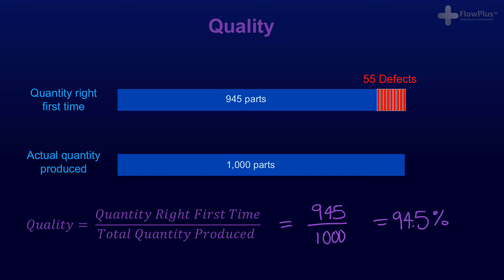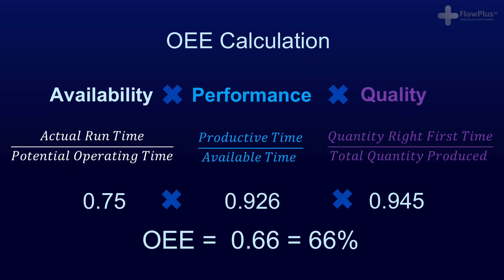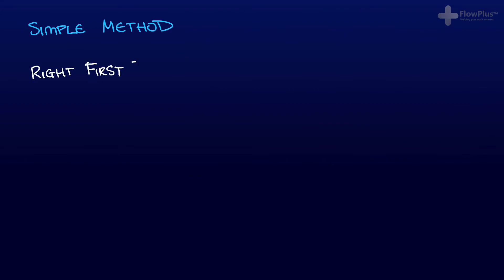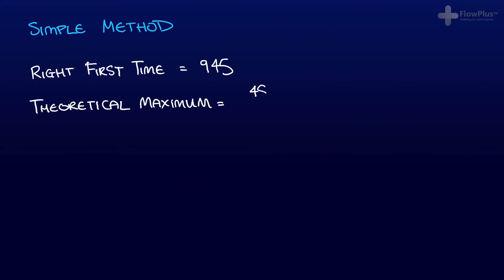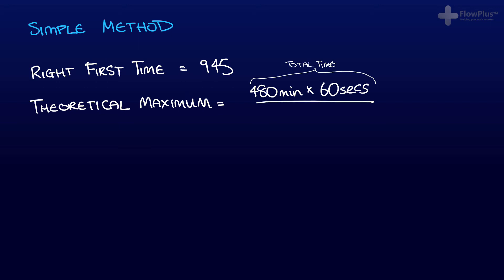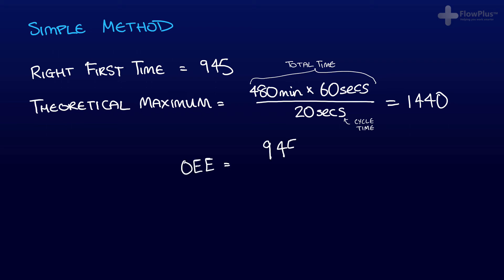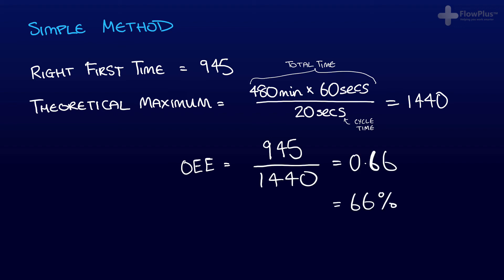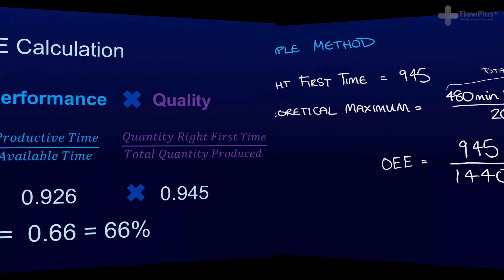Now that all the elements of OEE have been calculated, you just multiply them together. By multiplying all the values together, you get an OEE value of 0.66 or 66%. This can now be compared with the simple calculation, which would show that 945 right-first-time products were produced out of a theoretical maximum of 480 minutes × 60 seconds ÷ 20-second cycle time = 1,440 products. So 945 divided by 1,440 equals 66%, confirming that both calculations match and the OEE is correct.